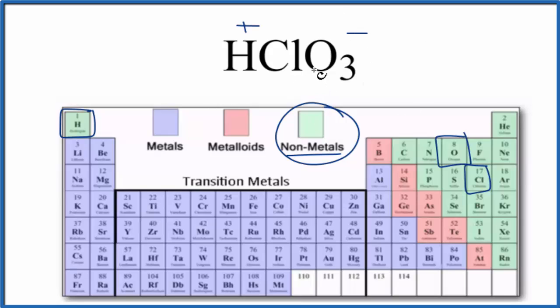If you need more help with that, there's a link in the description really detailing that process. But because we have all non-metals here that make up HClO3, we say that HClO3 is a covalent compound.